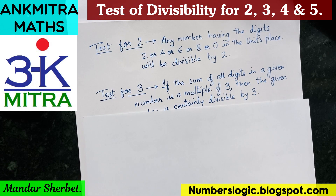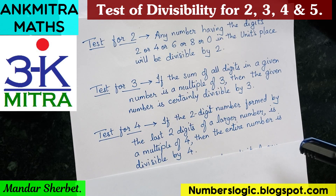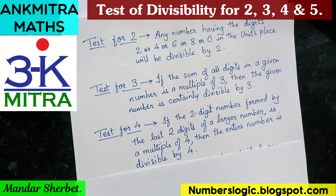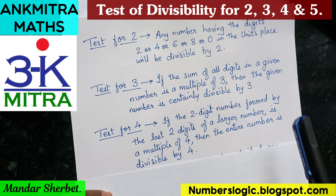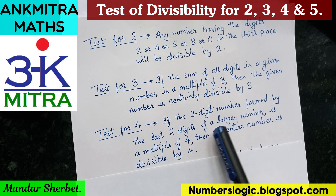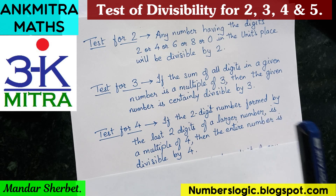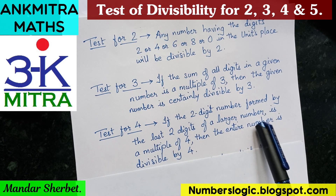Now let's move to test for divisibility by 4. This is a little different from the previous two tests. 4 itself is even, so all its multiples will be even, but not all even numbers are divisible by 4 — every alternate even number is a multiple of 4. So for a larger number of three or more digits, we have to take the last two digits — the tens place and units place — to form a two-digit number.